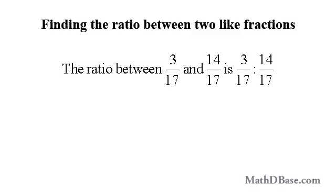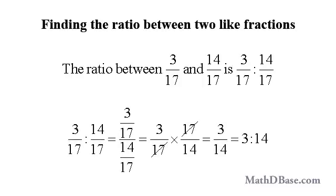Two like fractions — fractions with the same denominators — are in the ratio of their numerators. For example, the ratio between 3 over 17 and 14 over 17 is 3/17 to 14/17, which we can rewrite as the complex fraction 3/17 over 14/17, simplifying to 3 over 14. So 3 over 14 equals the ratio 3 to 14, the ratio of the numerators of the original fractions.